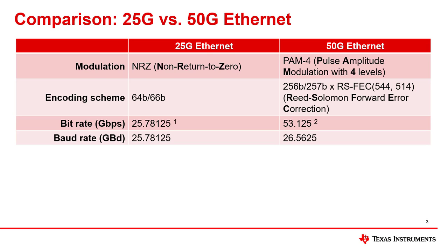These two versions of Ethernet also utilize different encoding schemes. 25 gigabit Ethernet implements 64B/66B encoding, meaning data is split into 64-bit words and two bits of overhead are added to each word. When the original data speed of 25 gigabits per second is multiplied by the encoding overhead, this results in a bit rate and baud rate of 25.78125 gigabaud.